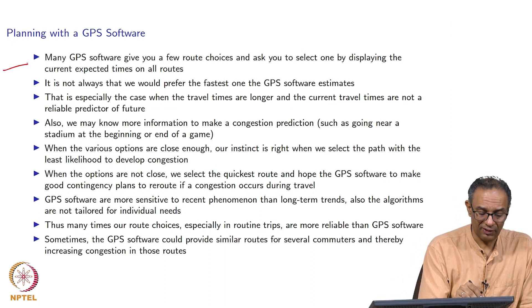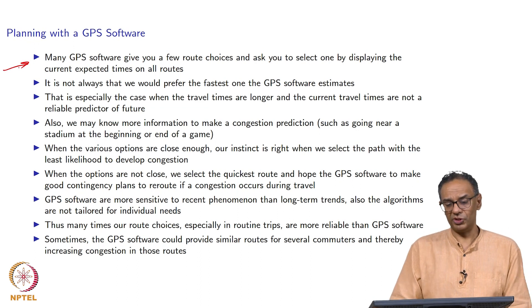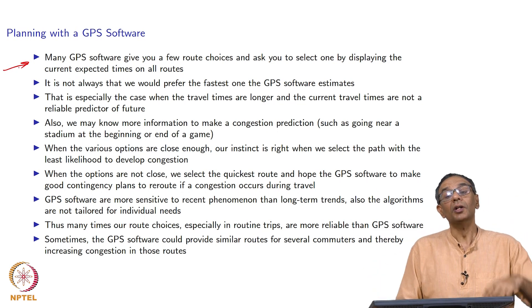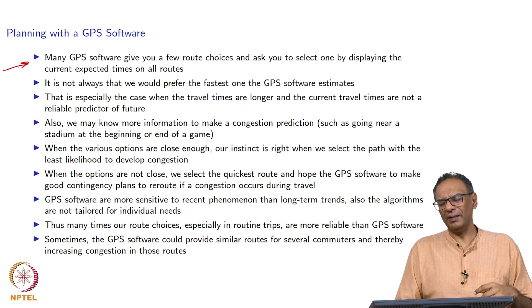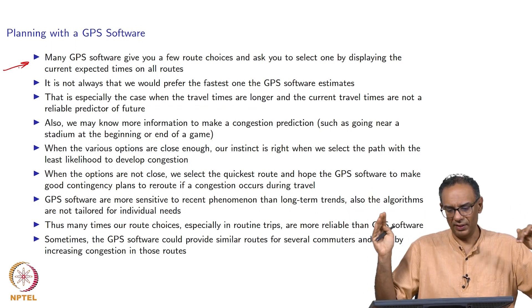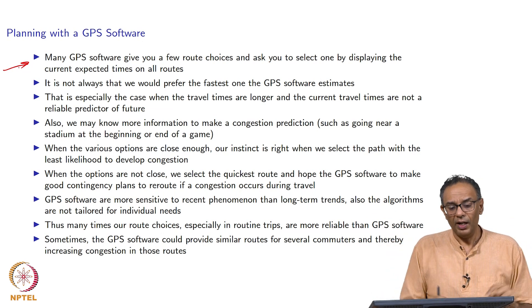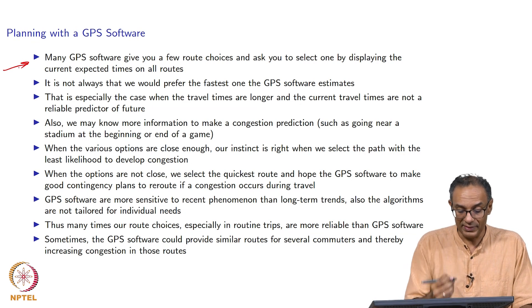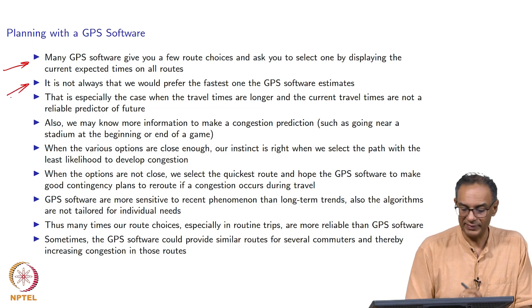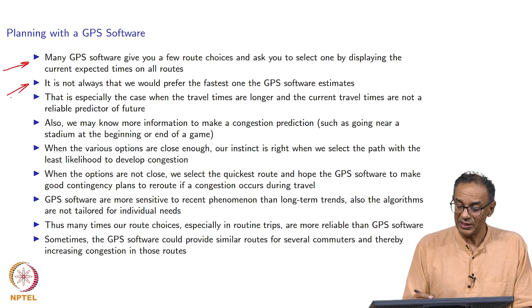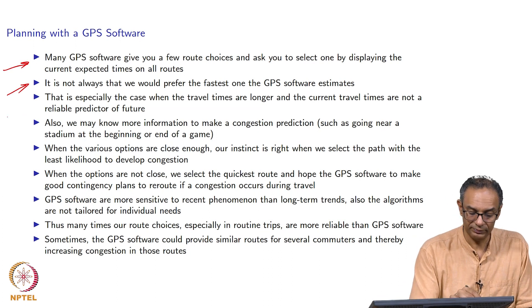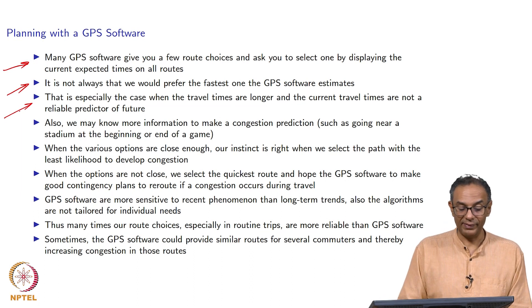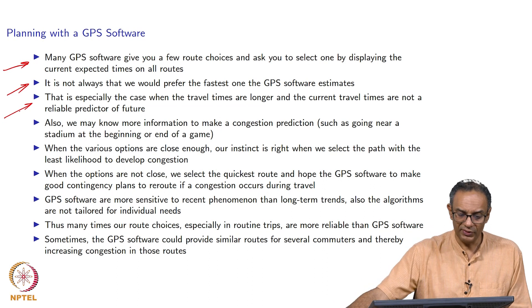GPS software like Google Maps will give you a few route choices and tell you to pick one — probably three route choices. Typically its first choice is the shortest time right now. You may not necessarily prefer that, which is why they give you a second and third choice. Sometimes you do not prefer the GPS software's recommendation, especially when travel times are somewhat long and current predictions are not necessarily reliable. Let me give you an example.